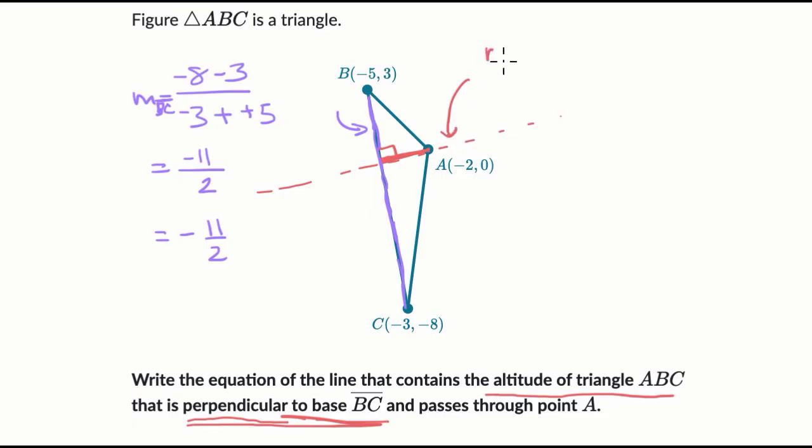So this line right over here, its slope is going to be not just the reciprocal, which is two over 11. Actually, it would be negative two over 11, but we're gonna take the negative of that. So it's positive two over 11. So instead of negative 11 halves, we're gonna take the negative, so that would make it positive. And then we flip it. We take the reciprocal. So this slope right over here is going to be two elevenths.